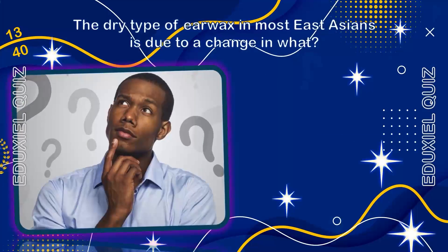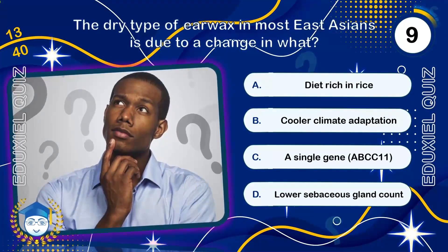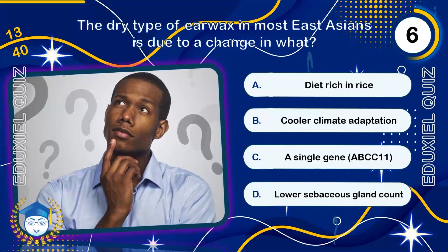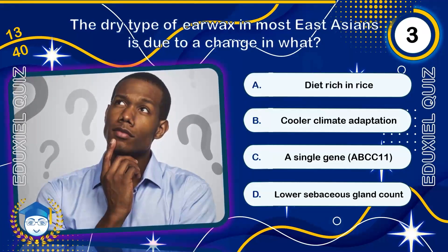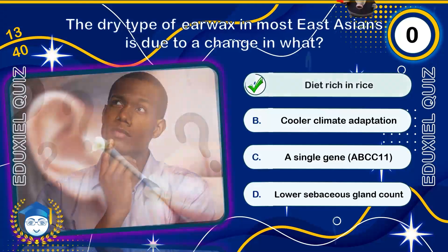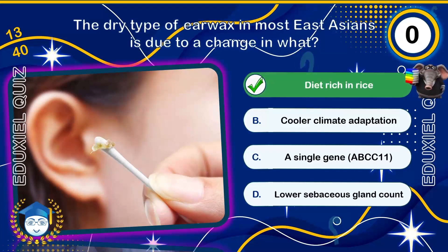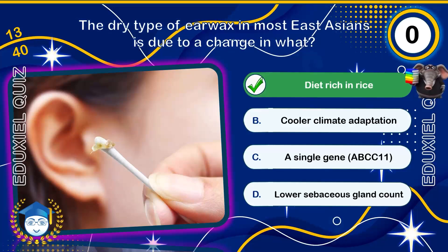The dry type of earwax in most East Asians is due to a change in what? A single gene, ABCC11. The variation on this single gene determines earwax type and is also linked to reduced body odor in the population with dry earwax.